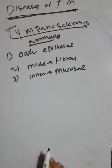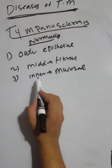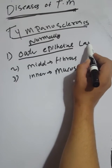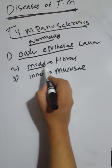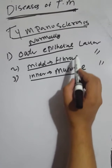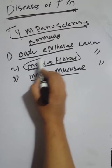Tympanosclerosis: normally the tympanic membrane consists of an outer epithelial layer, the middle fibrous layer, and inner mucosal layer.